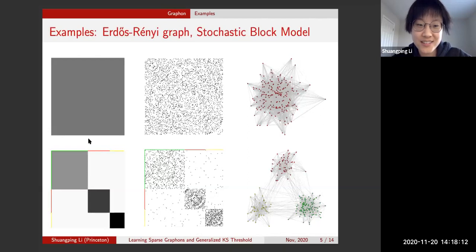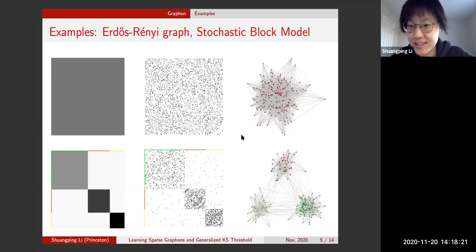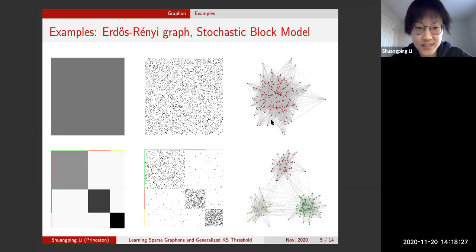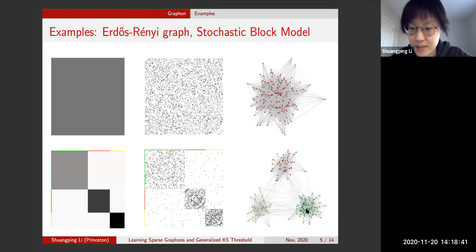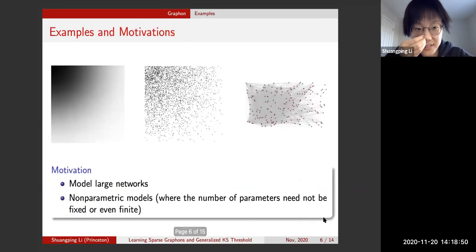Looking at examples: when the graphon is a constant function, you get an Erdős–Rényi random graph, and depending on rho_n it will be sparse or dense. When the graphon is piecewise constant, you get a stochastic block model — vertices from the same community are more likely to connect to each other than to vertices from other communities.